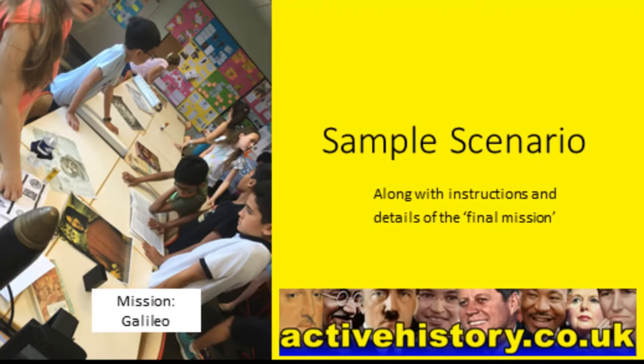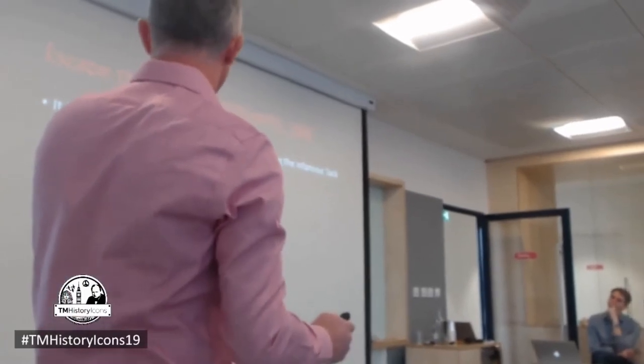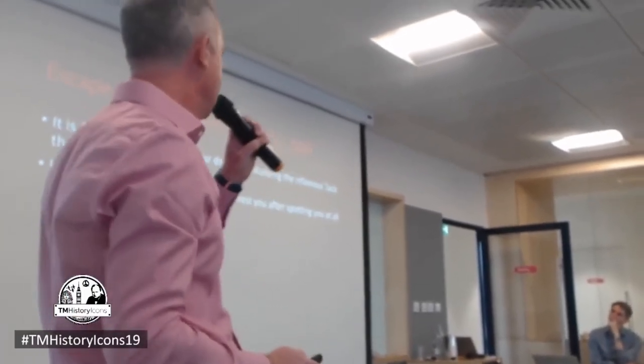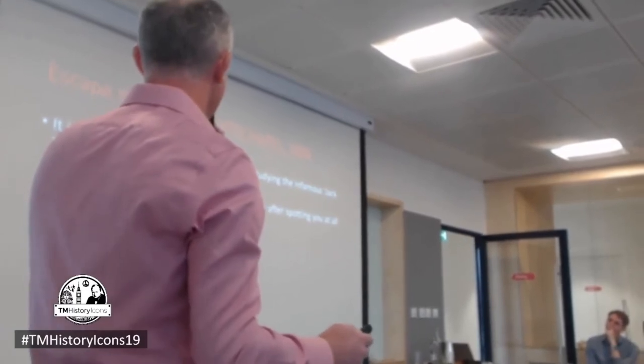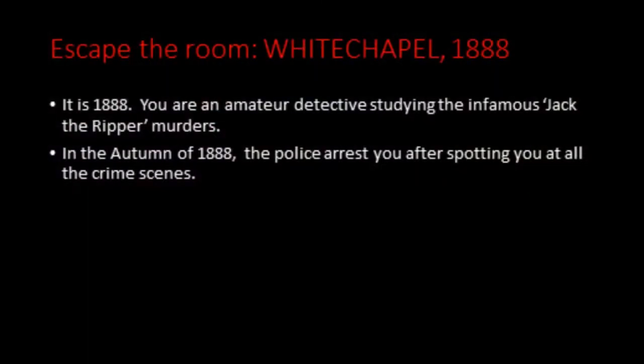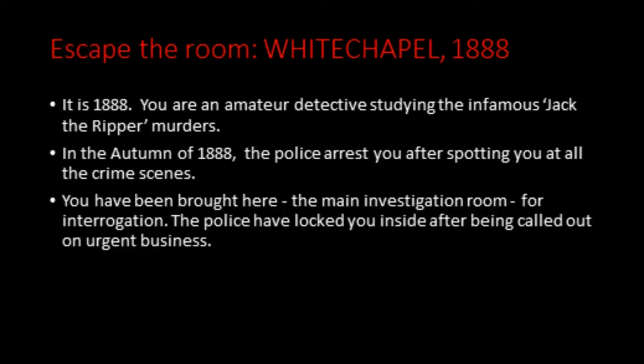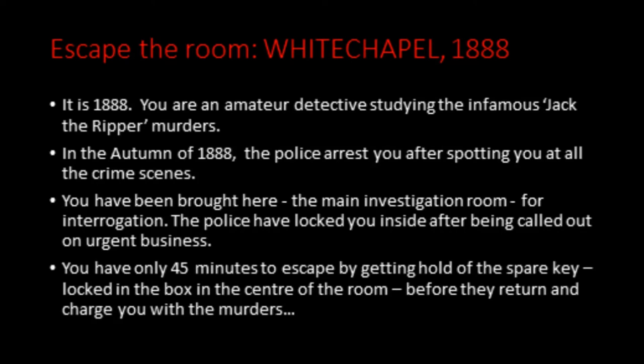The most recent one I did was two weeks ago with Year 9. It's 1888. You're an amateur detective studying the infamous Jack the Ripper murders. In the autumn of that year, the police arrest you after spotting you at all of the crime scenes. You've been brought here to the main investigation room for interrogation. The police have locked you inside after being called out on urgent business — that explains why the sources are all around the room. You've got 45 minutes to escape. You've got to get hold of the spare key which is locked in a box in the centre of the classroom before the police return and charge you with the murders.